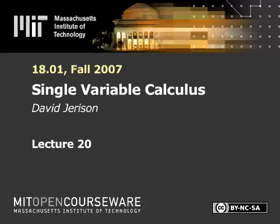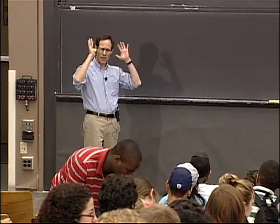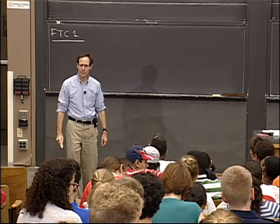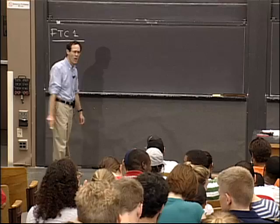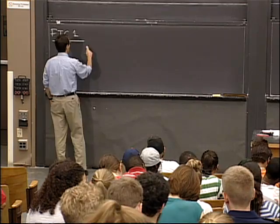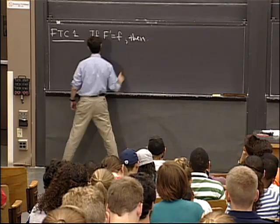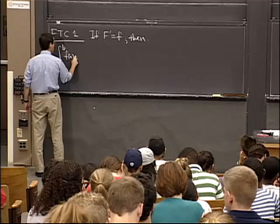To begin today, I want to remind you of the Fundamental Theorem of Calculus. We called it FTC1 because it's the first version. We'll be talking about the second version today. What it says is: if F' is equal to f, then the integral from a to b of f dx is equal to F(b) minus F(a).